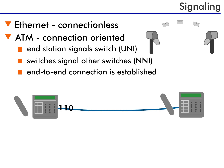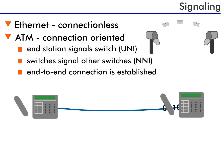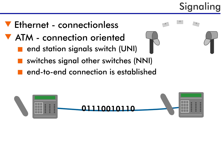Well, here's the difference. Ethernet is essentially connectionless, and ATM is connection-oriented. When you send an Ethernet packet, you are not required to first establish an end-to-end connection — you just send it. ATM, on the other hand, requires the connection to be established first.